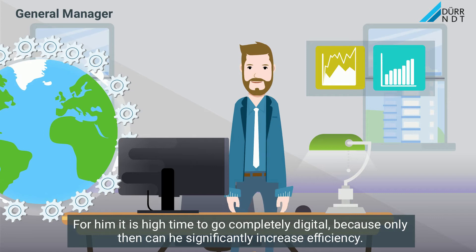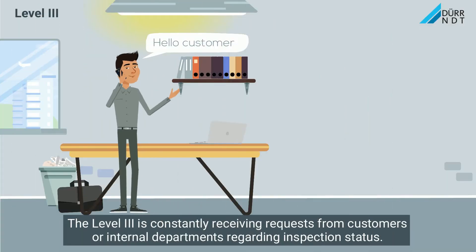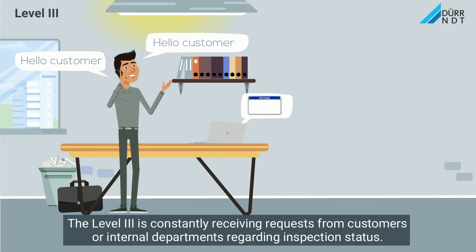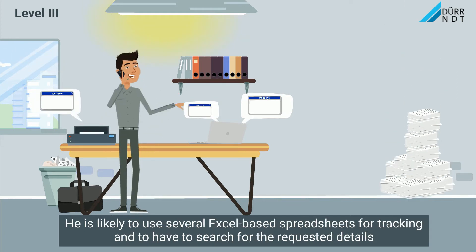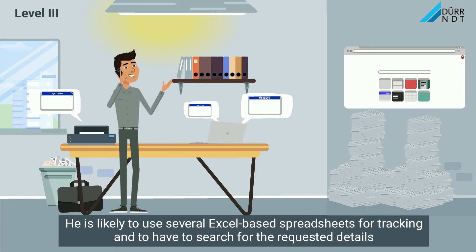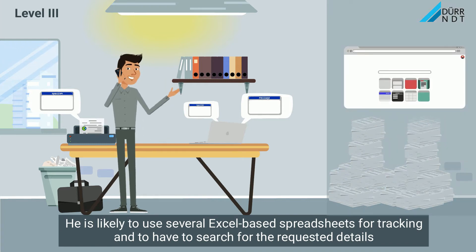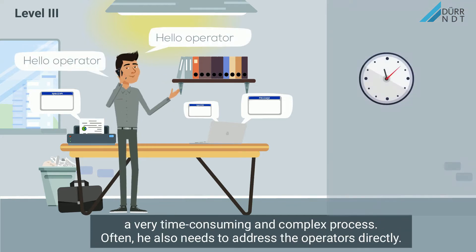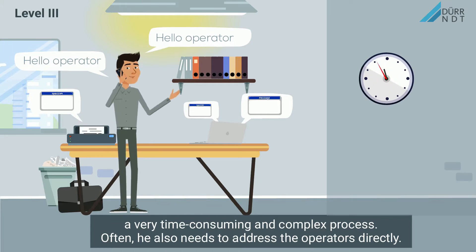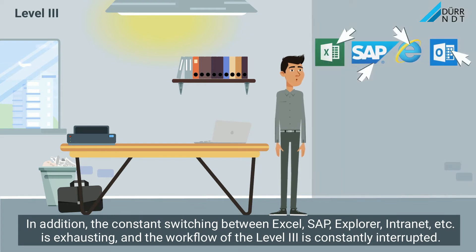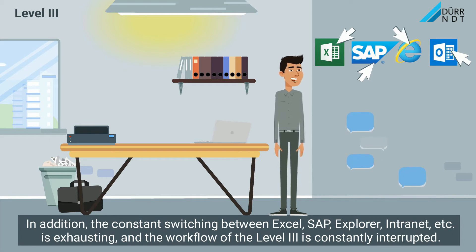For him, it is high time to go completely digital, because only then can he significantly increase efficiency. The Level 3 is constantly receiving requests from customers or internal departments regarding inspection status. He is likely to use several Excel-based spreadsheets for tracking and has to search for the requested details — a very time-consuming and complex process. The constant switching between Excel, SAP, Explorer, intranet, etc. is exhausting, and the workflow of the Level 3 is constantly interrupted.